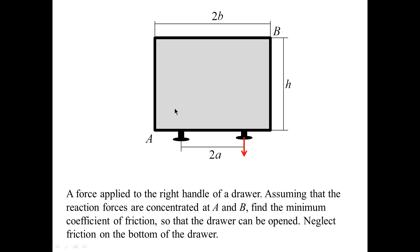It forms contacts with the surrounding walls at A and B. Further, we assume that friction at the bottom is negligible and our task is to determine the minimum coefficient of friction so that the drawer can be opened.